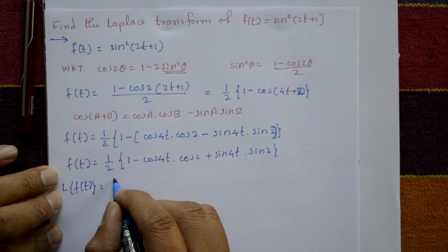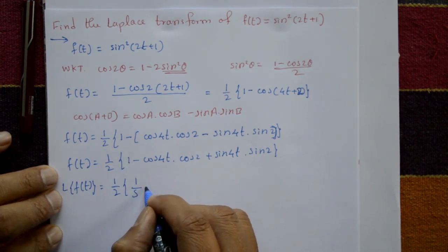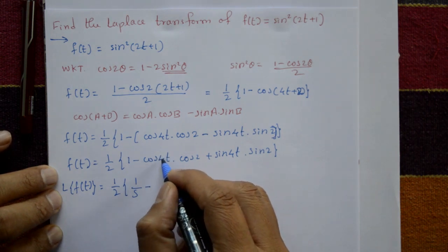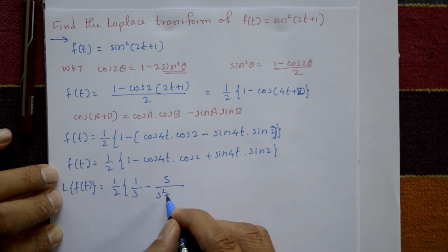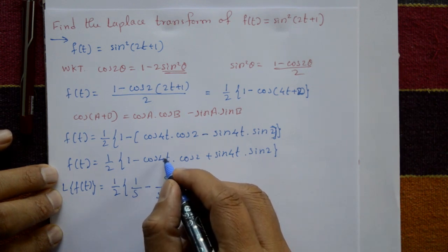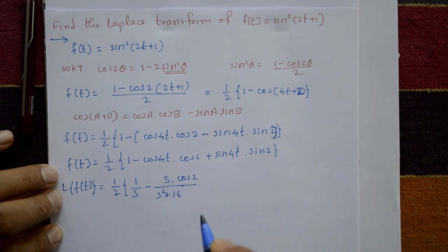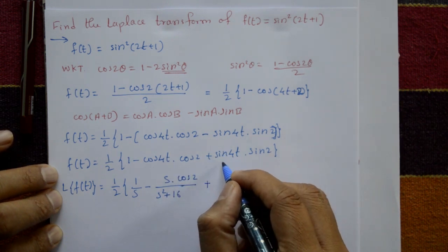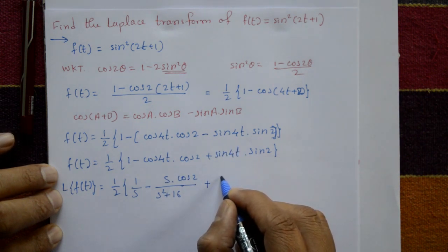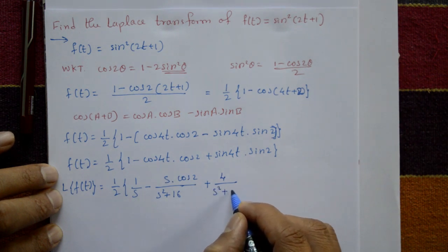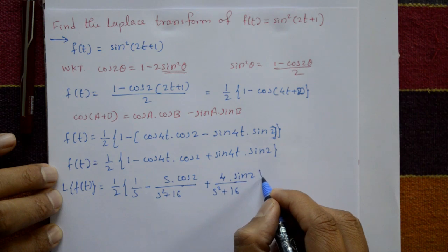Applying the Laplace transform: L{f(t)} = (1/2)[L{1} - cos(2)·L{cos(4t)} + sin(2)·L{sin(4t)}] = (1/2)[1/s - cos(2)·s/(s² + 16) + sin(2)·4/(s² + 16)]. This is the required solution.